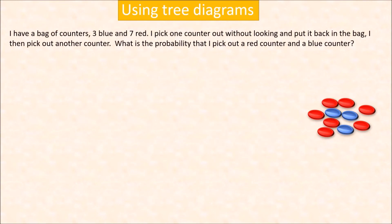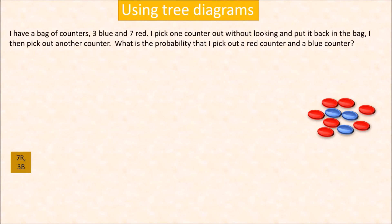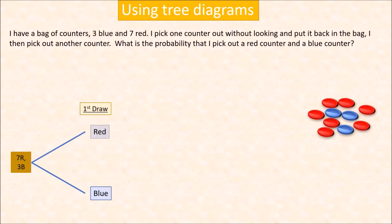Another way of showing outcomes is using a tree diagram. We usually use this when we want to show outcomes of successive events. For example, I have a bag of counters — 3 blue and 7 red. I pick one counter out without looking and put it back in the bag, then pick out another counter. Start with 10 counters total: 7 red and 3 blue. On the first draw, draw two branches — one for red with probability 7 over 10, and one for blue with probability 3 over 10.